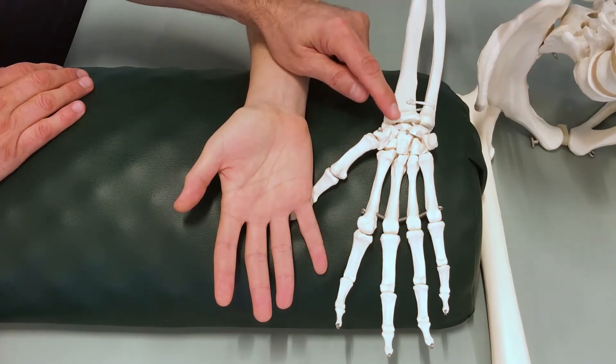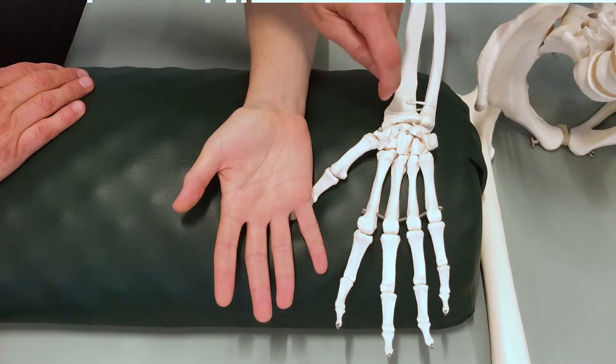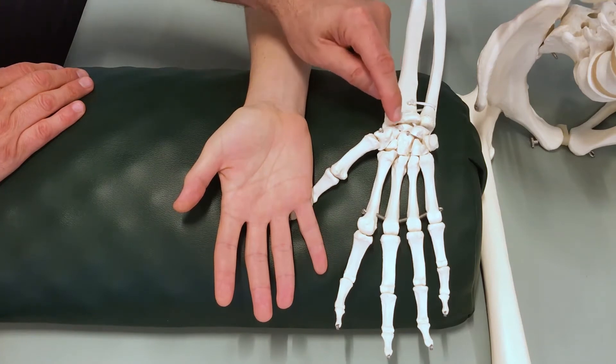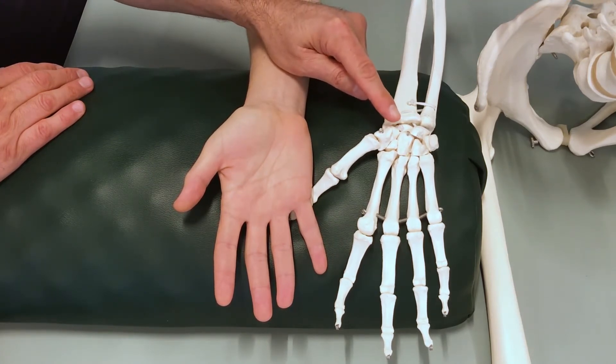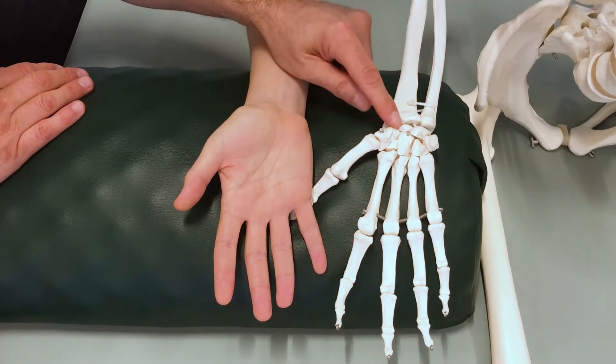Now a note about this plastic skeleton, the scaphoid is a bit more recessed down and away. That tubercle of the scaphoid should be a bit more prominent there on the anterior side.